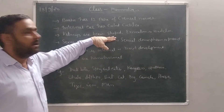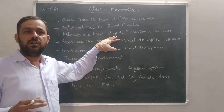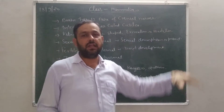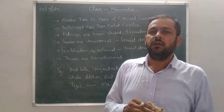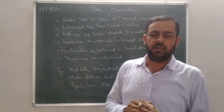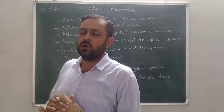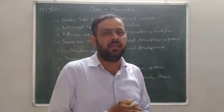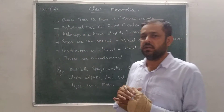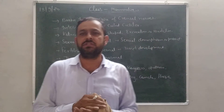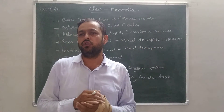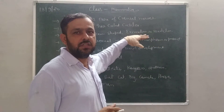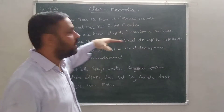Kidneys are bean-shaped. The excretory organ is the kidney. Excretion is ureotelic, meaning Mammalia secrete urea as excretory material. When an organism excretes ammonia it is ammonotelic; when it excretes urea it is ureotelic; when it excretes uric acid it is uricotelic. Mammalia are ureotelic because they secrete urea.